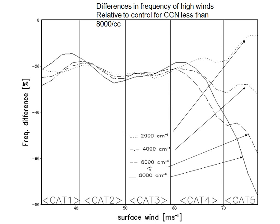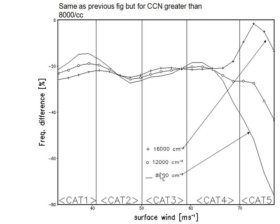Looking at surface winds, going from 2,000 to 4,000, 8,000, and up to 8,000 per cubic centimeter concentrations released by this aircraft. These are the different category winds showing the probability density function of winds changing in response to seeding. First of all, everything shows a reduction in storm intensity. Secondly, we see a monotonic response we didn't see in other simulations — an appreciable decrease in Category 5 wind intensity, a similar but weaker response in Category 4, and no response in lighter wind situations.